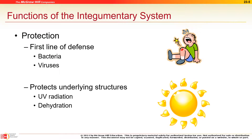The first function is protection — it keeps everything on the outside out and whatever's supposed to be on the inside in. UV protection comes from our pigmentation; we'll talk about melanocytes and how we get pigmentation. Our oil glands condition the skin and help prevent dehydration.